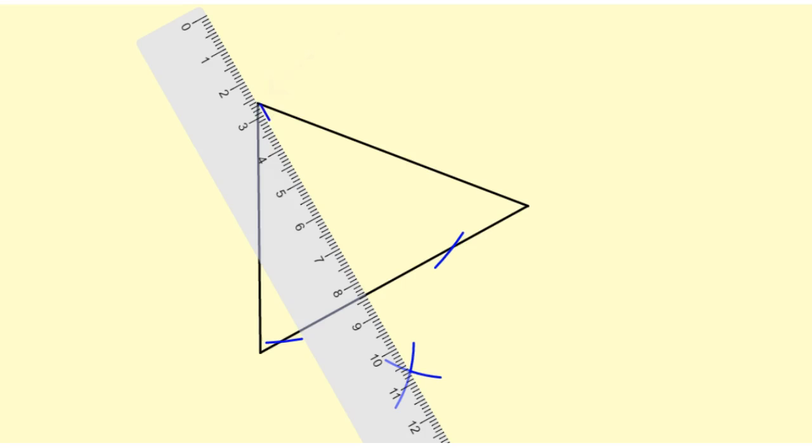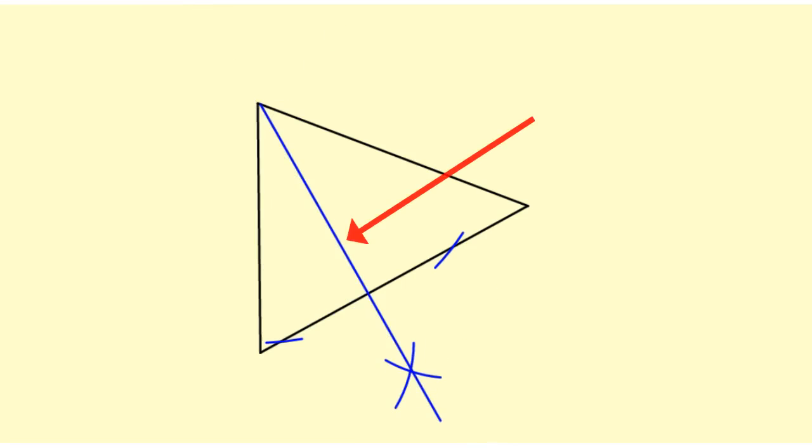I'm going to take my ruler and connect that vertex with that point of intersection, and this line is perpendicular to that side. Now we'll do the other two altitudes.